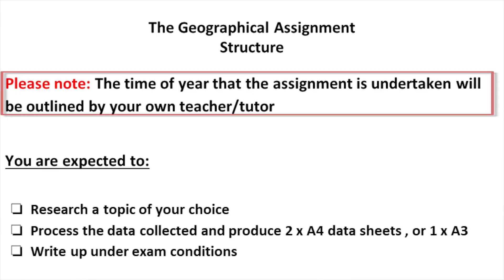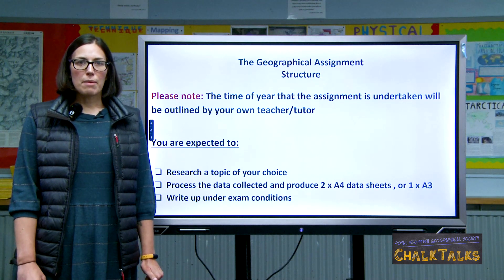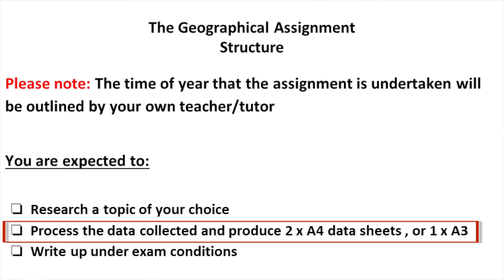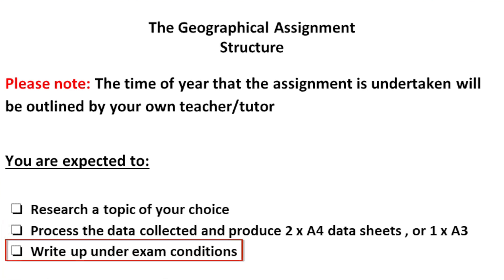The assignment can be completed at any time during Term 1 or Term 2, and different schools and centres will have different timescales, so please talk to your teacher or tutor for more precise details. The general structure of the assignment is split into three parts: the choosing and research of a topic or issue, the collection of data and production of processed information sheets — which can be two A4 sheets or one A3 sheet — and then the final write-up.